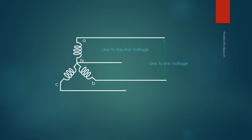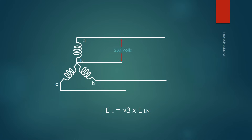In a star-connected system, line current is equal to line-to-neutral current. But in the case of voltage, it is different. The windings are placed 120 degrees apart. Applying Kirchhoff's voltage law and doing the mathematics, you find that the line-to-line voltage is root 3 times the line-to-neutral voltage. So EL = √3 × ELN, where EL is the line voltage and ELN is the line-to-neutral voltage.